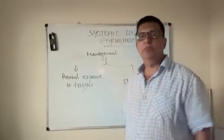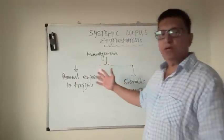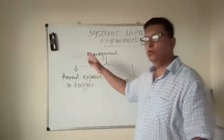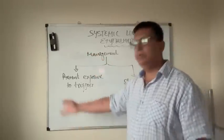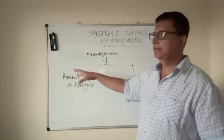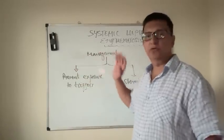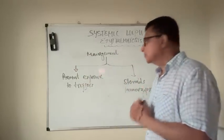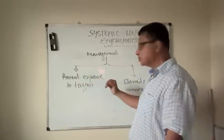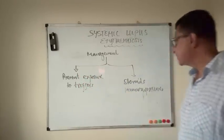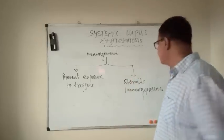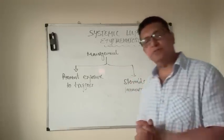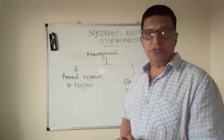Regarding the management of SLE: if somebody is diagnosed, SLE can be treated but it can also relapse. There is a relapsing-remitting pattern, and to stop relapses we can prevent exposure to triggering factors. If there is a relapse, we can use steroids or immunosuppression. This should be managed by a rheumatologist.